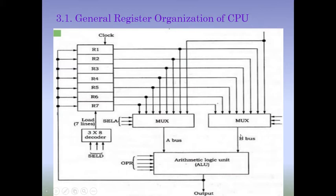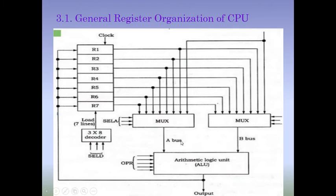Similarly, we have another set of multiplexers giving output to Bus B, with a selection input called SELB. SELB also uses 3 bits, so 2 to the power 3 equals 8 — again we can select one of the 8 registers. So we have two buses: Bus A and Bus B, and we can select any register's content into either bus.